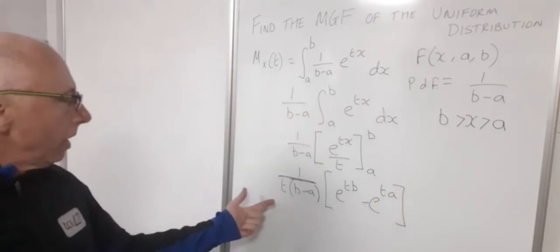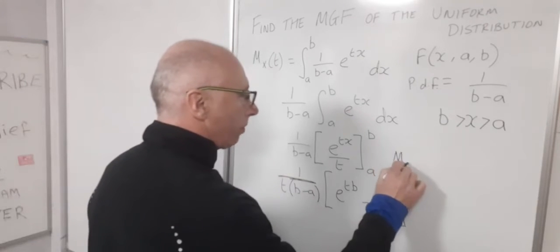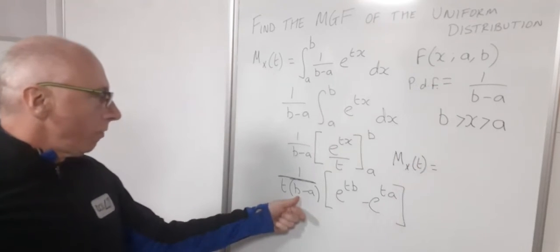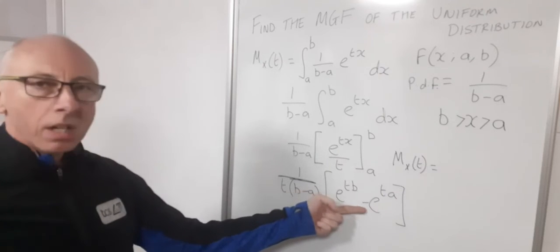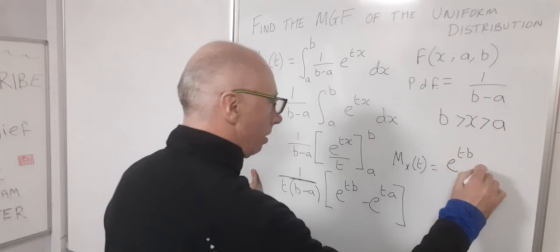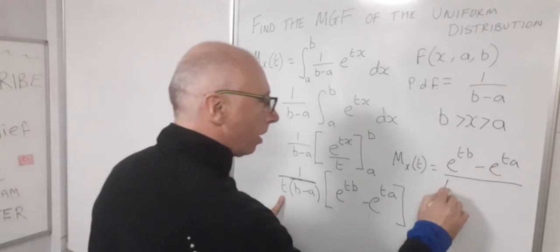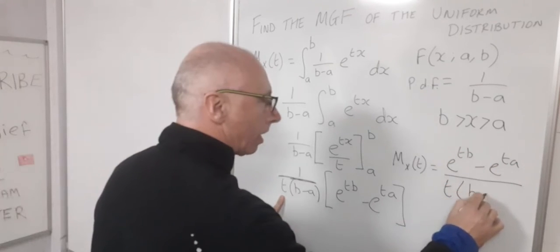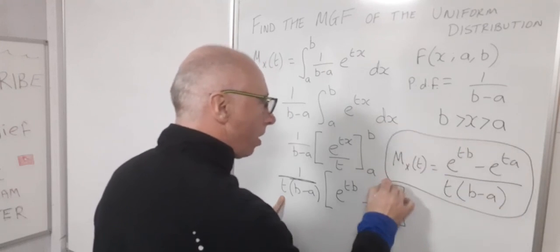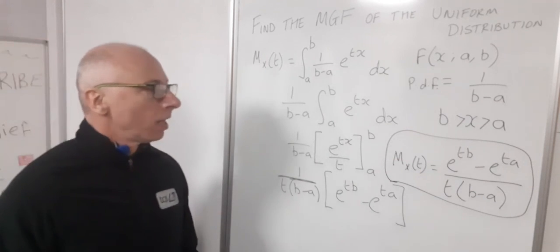So now we can submit an answer now for our moment generating function. So now we'll say our moment generating function with parameter T. This is, we could write this all as a fraction, put this in our numerator, this in our denominator. So we can say E to the T B minus E to the T A divided by T times B minus A. And that is our answer for our moment generating function of the uniform distribution.